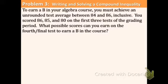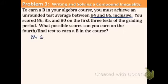Example three: to earn a B in your algebra course, you must achieve an unrounded test average between 84 and 86 inclusive. You scored 86, 85, and 80 on the first three tests. What possible scores can you earn on the last test? Inclusive means including those values, so we have lines underneath the symbols. The average is found by adding all scores and dividing by the number of tests — so we add 86 plus 85 plus 80 plus X, divided by four.